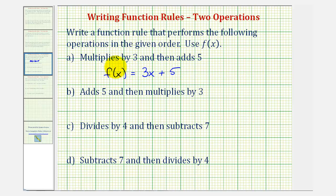Notice following the order of operations, if the input is x, we'd first multiply by three and then add five.